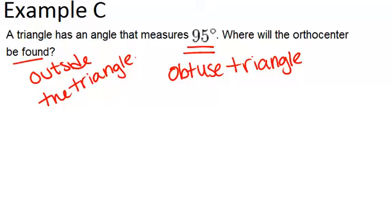The third possibility is if it's a right triangle, then the orthocenter would be on the triangle. Even though that wasn't part of this question, that's a good thing to know. Those are the three possibilities and what happens in each case.